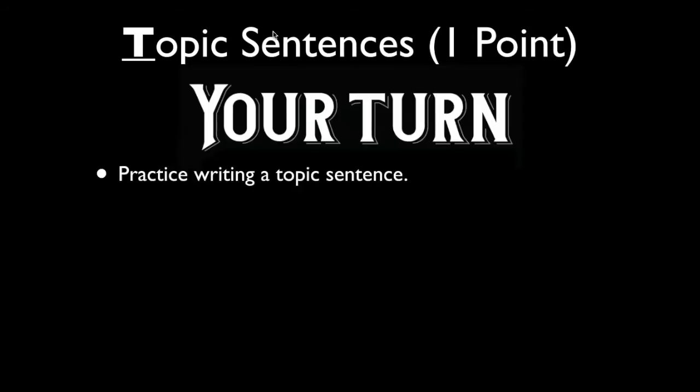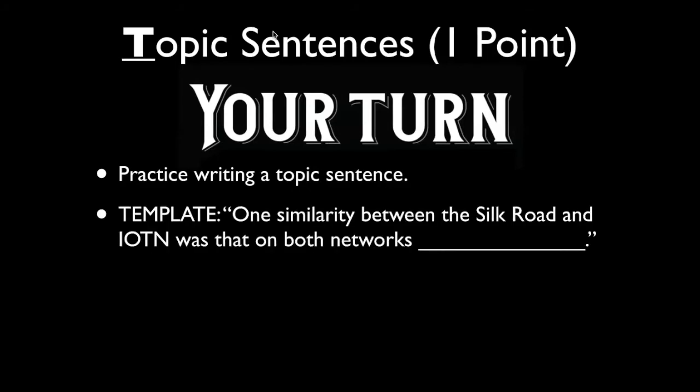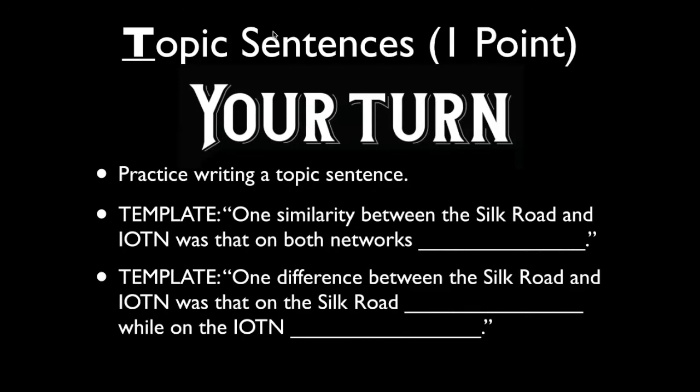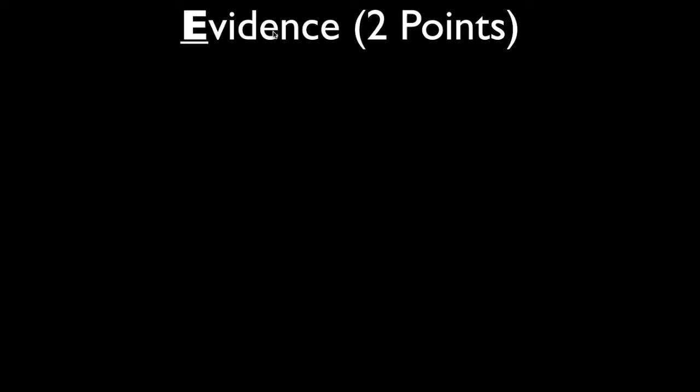Now it's your turn. Practice writing a topic sentence, drawing again from the claims you developed in your thesis. Use the template: 'one similarity between the Silk Road and the Indian Ocean network was that on both networks...' and whatever your claim is. Or if you're writing about a difference: 'one difference between the Silk Road and the Indian Ocean network was that on the Silk Road... while on the Indian Ocean network...'